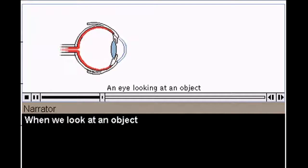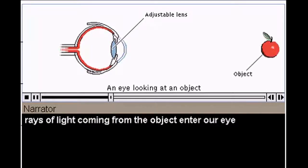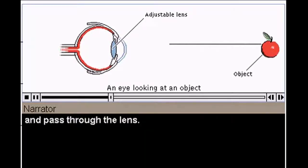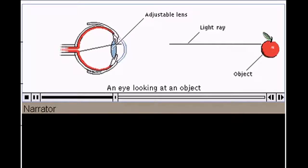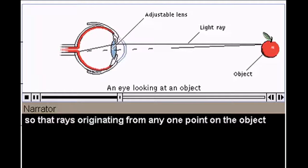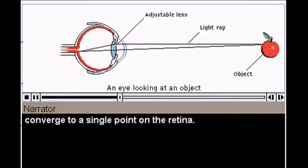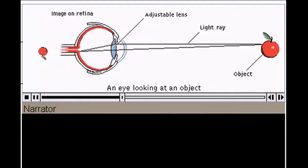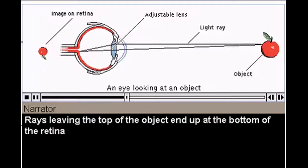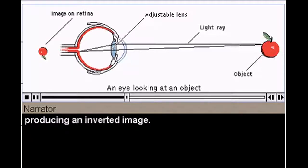When we look at an object, rays of light coming from the object enter our eye, and pass through the lens. The lens bends the light so that rays originating from any one point on the object converge to a single point on the retina. Rays leaving the top of the object end up at the bottom of the retina, producing an inverted image.